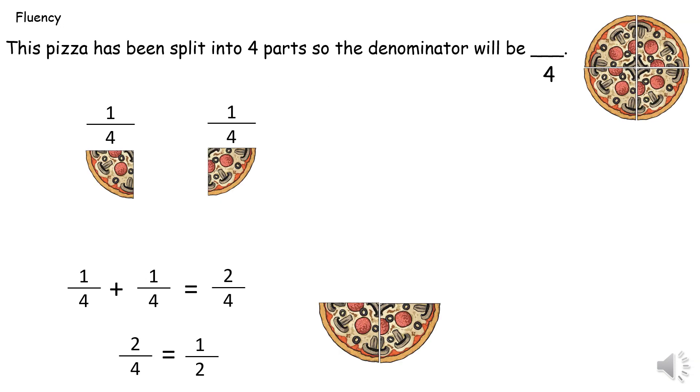This pizza has been split into four parts so the denominator will be four because one whole pizza has been divided into four. Now here we are going to add two of the quarters together, two of the parts. So the number sentence will be one quarter add one quarter equals two quarters. Now last week you were working on equivalent fractions so you should be able to see that two quarters is equal to one half.